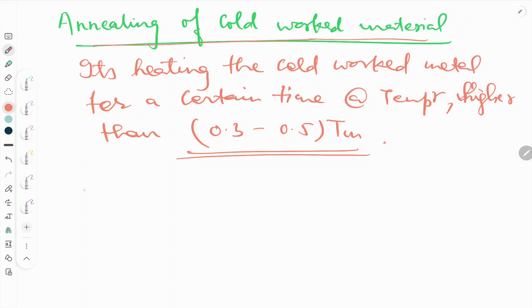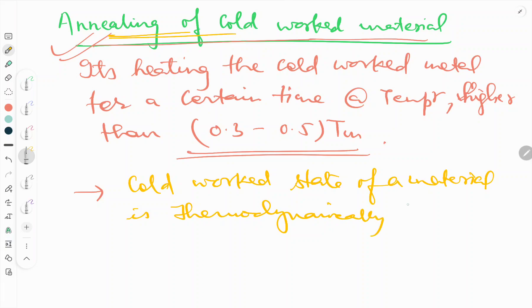The cold worked state is thermodynamically unstable. That is why we go for annealing of cold worked material. I'll also mention the reason here for this annealing process - because the cold worked state of a material is thermodynamically unstable.